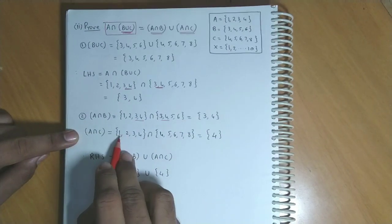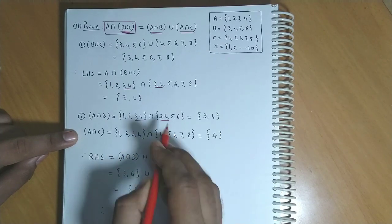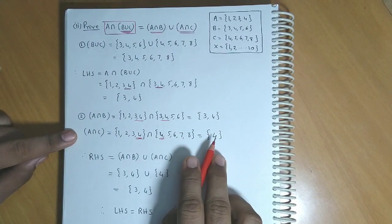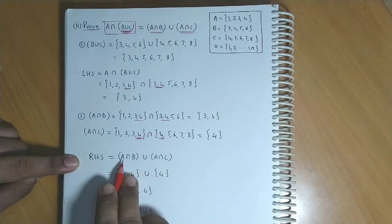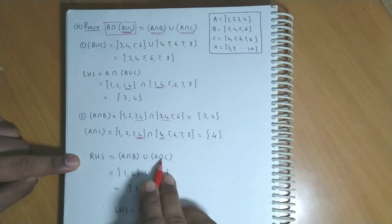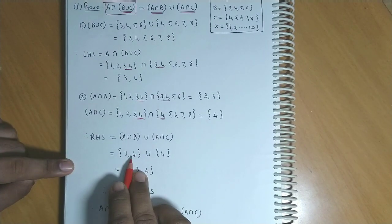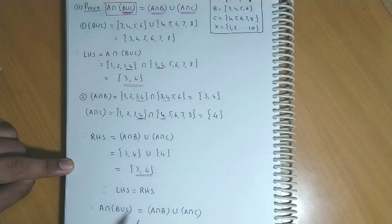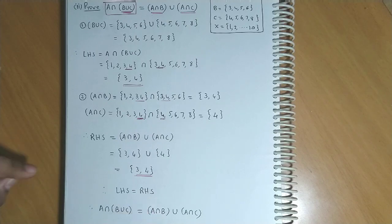Ab A and C ka intersection. A mein hai {1, 2, 3, 4}, C mein hai {4, 5, 6, 7, 8}. Toh in doonoh mein jo common element aata hai woh hai 4. So A intersection C is {4}. Now we obtain the right hand side as A intersection B union A intersection C. A intersection B ka value tha {3, 4} aur A intersection C mein element aaya {4}. Ab in doonoh ka union karte hai, we get the elements {3, 4}. And left hand side mein bhi hume elements mile {3, 4}. So we could say left hand side is equal to the right hand side. Hence proved.